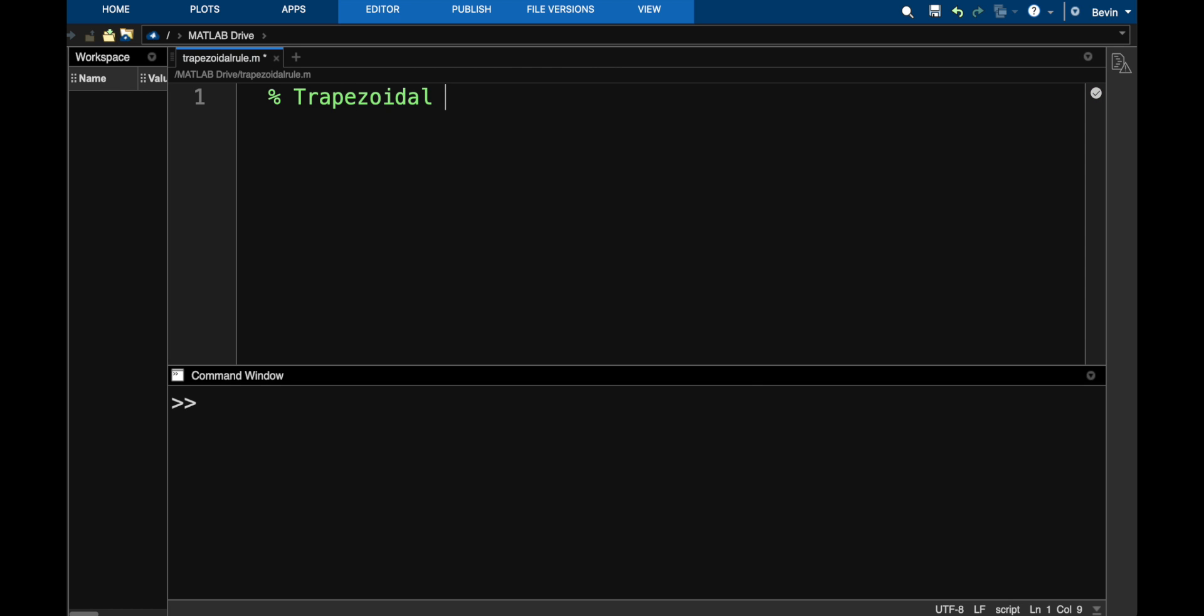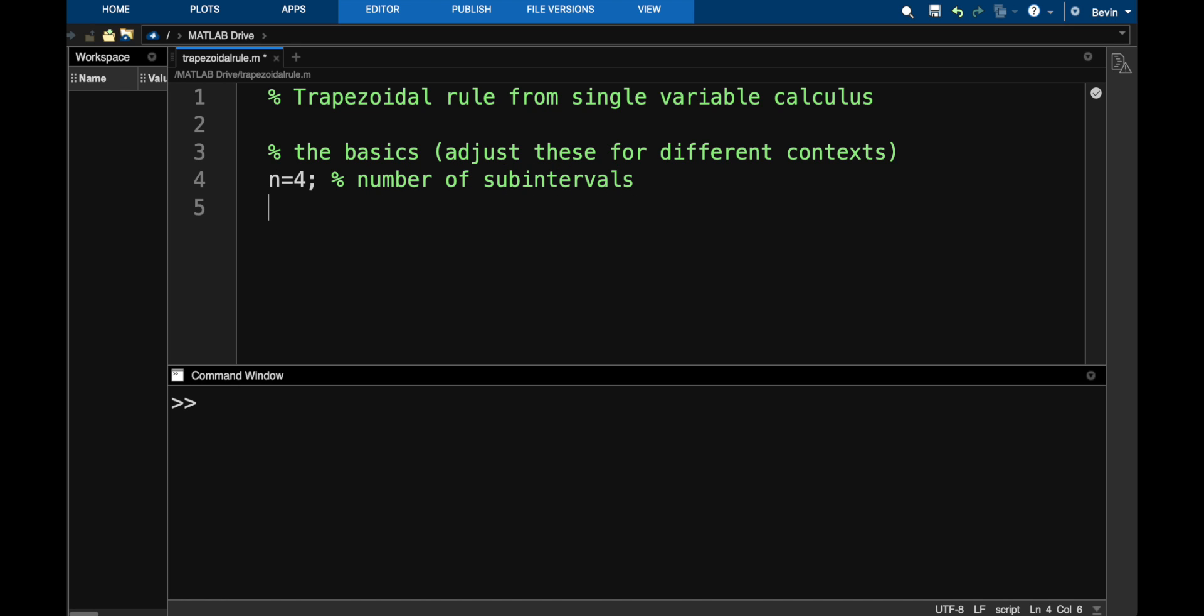So this is trapezoidal rule from single variable calculus. The basics, adjust these for different contexts. The first variable I'm going to define is the number of trapezoids that we create. We've been calling that N. So let me say that my basic script I'm writing is going to do four subintervals, but that can be changed for future iterations.